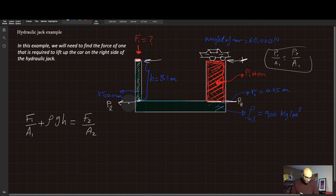Alright, good. Now we have everything. Let's plug in the numbers. So F1, that's what we still want to find. A1 is pi R1 squared plus rho is given, G is given, H is given, so I'm going to write those down as they are rho G H.